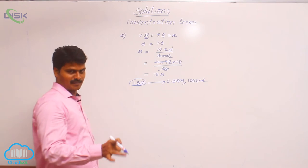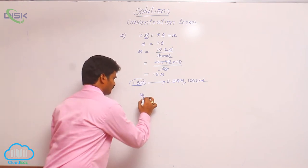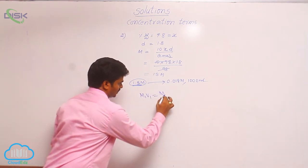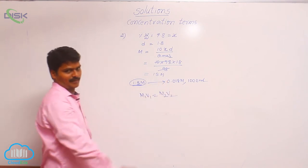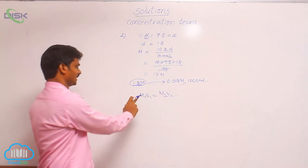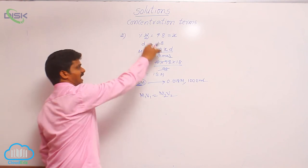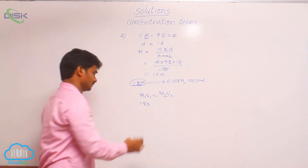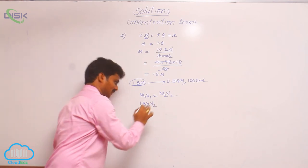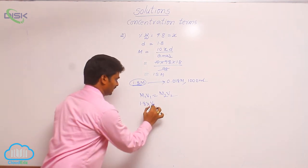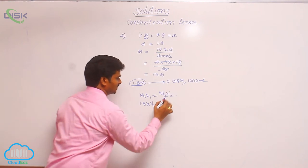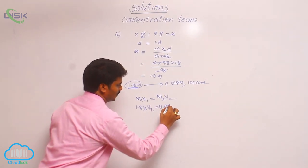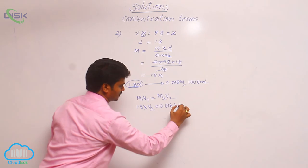Already, I had given the dilution formula. M1 V1 equals to M2 V2. This is the formula for dilution. Here, M1 is given. Already, we have calculated that is M1 1.8 into volume. That is the term we have to find out, V1. Here, M2 means 0.018 into volume 1000 ml.